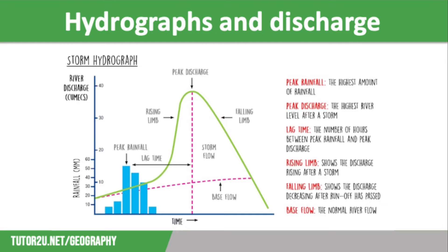Rainfall is shown by a bar graph and discharge is shown by the line graph. The rising limb shows how fast the river level is rising and is always steeper than the falling limb, which shows how quickly the river level recovers after a flood event.